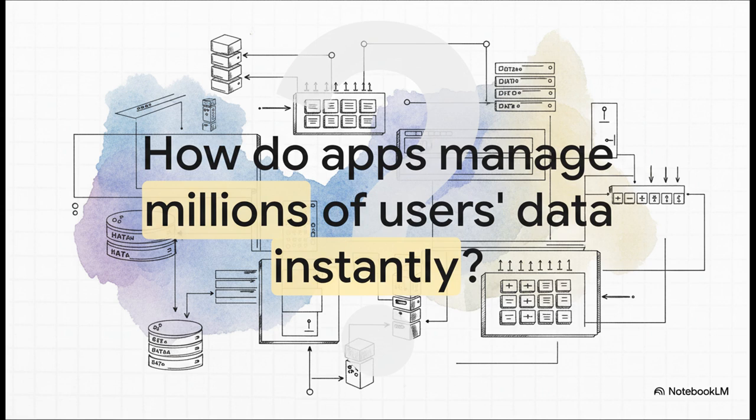I mean, seriously, think about it for a second. How does a social media app instantly find your friend's latest post from literally billions of others? Or how does a music service just pull up that one specific playlist you want in a fraction of a second? Now, this isn't magic. It's the result of solving one huge universal challenge. How do you organize an insane amount of information so you can find and use it like right now?